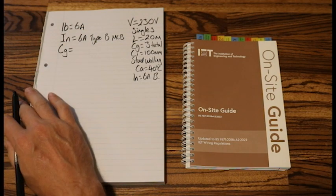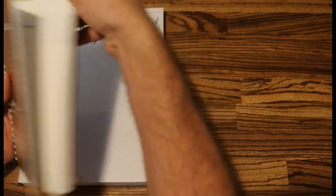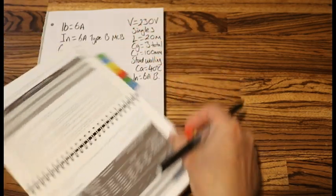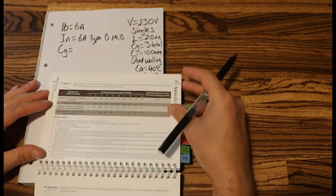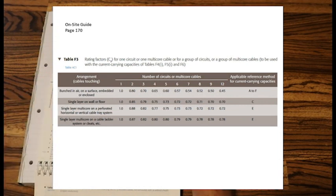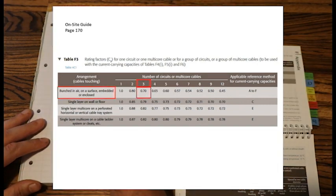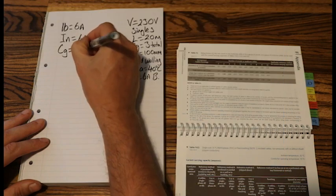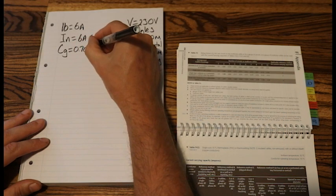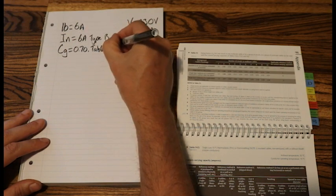So we'll start with the first one we come to is CG. So CG equals, let's get the on-site guide out, go to my CG tab. So CG, we're going to be in the top row, bunched in air on a surface, embedded or enclosed. We have a total number of three circuits. So CG is 0.7. And that was table F3.